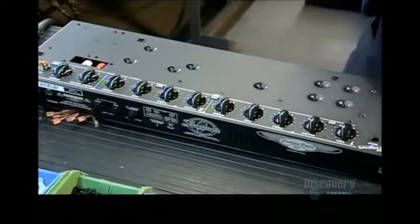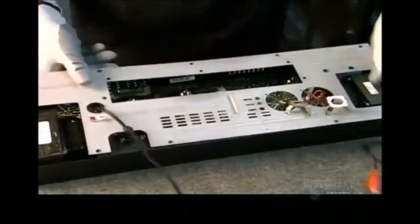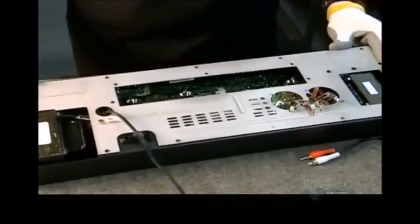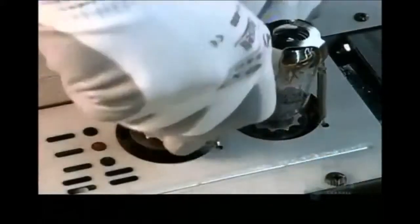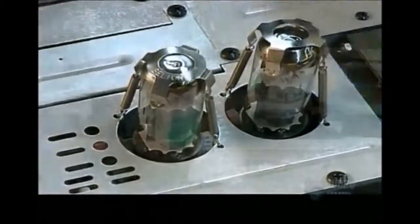After installing control knobs and covering the bottom of the chassis, workers insert and clamp the output tubes, the number of which usually varies according to how many watts of power the amp is designed to produce.